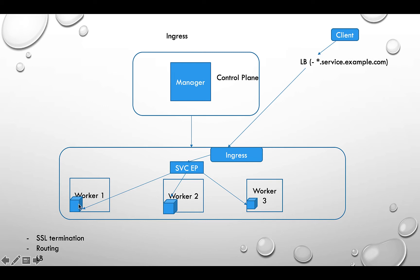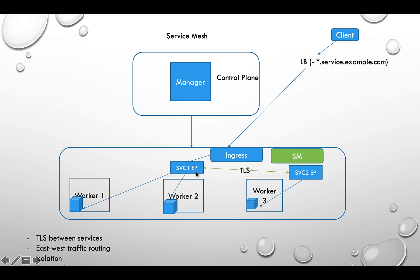What ingress is missing is TLS between services — between pods. If you have two services running, there is no TLS between them. There's also no east-west routing. If service one wants to reach service two and you still want security, one workaround is to go outside through the load balancer and back in — because between the two services there is no TLS in a regular ingress setup. That's where service mesh comes in.